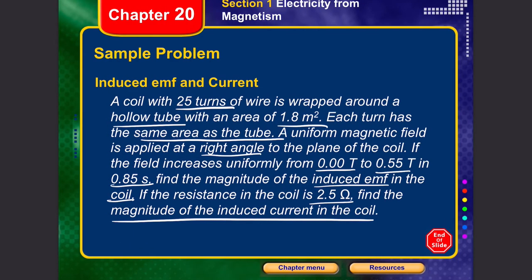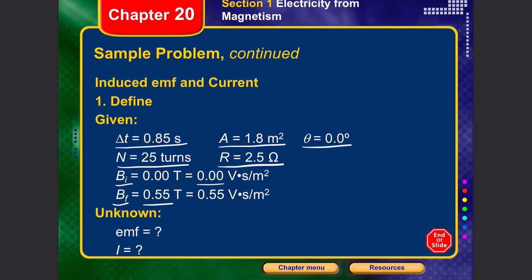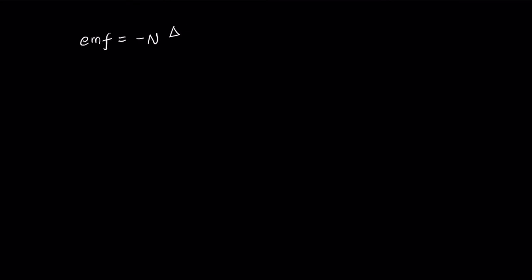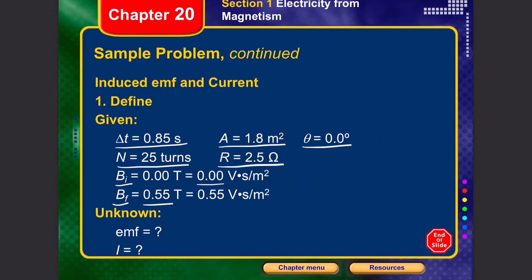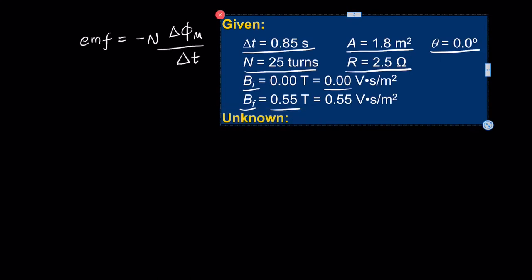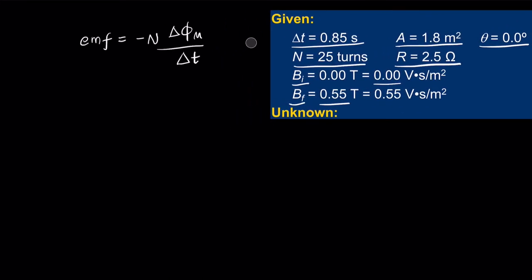The angle is 0 degrees because the field is at right angles to the structure — the angle is measured between the perpendicular to the plane and the field. Writing down the formula: EMF equals negative N times delta phi-m divided by delta t, where N is 25 turns. Delta phi-m becomes the change in B times A divided by delta t.